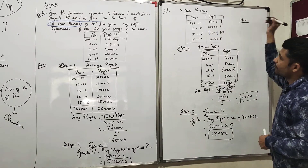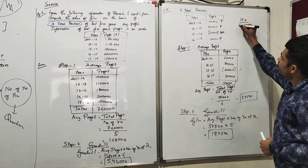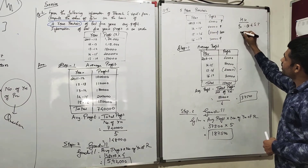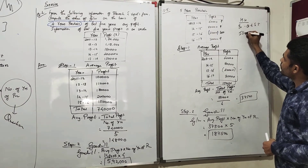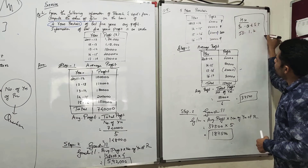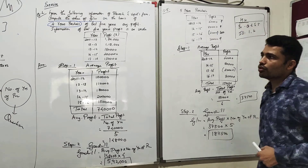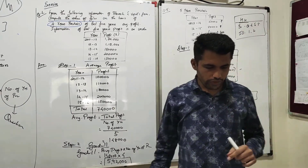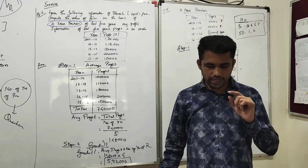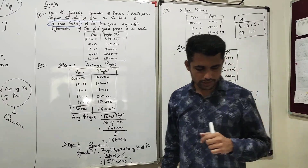Today's homework is Exercise Question Number Four and Five, and Illustration Number One and Two. Please send the homework on WhatsApp. Tomorrow we will be starting with a new method — that is the Weighted Average Profit Method. Thank you so much.